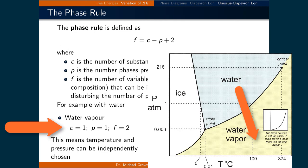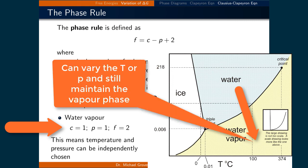For example, if we have water vapor, there is only one substance, H₂O, so C equals 1. There is only one phase, the vapor phase, so P is also equal to 1. Therefore F equals 1 minus 1 plus 2, which gives 2. This means we can select both temperature and pressure independently and still get water vapor.